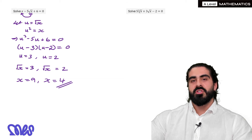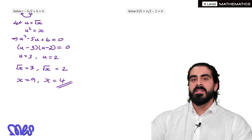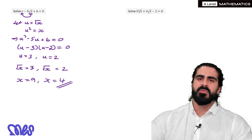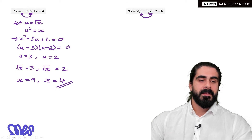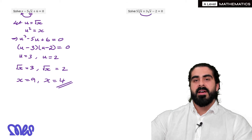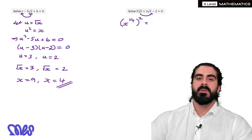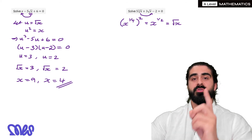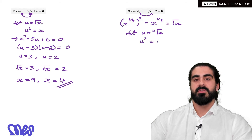Next one. This is an interesting question: 5 times the fourth root of x, plus 3 times the square root of x, minus 2 equals 0. The question is, what are we squaring to get to the other variable? If you take root x and square it, you get x — that's the wrong way around. But if we take the fourth root of x, which is x to the power of a quarter, and square that, we multiply the powers: a quarter times 2 is one half, and x to the power of a half is root x. So it's the fourth root of x which we square to get root x, meaning we let u equal the fourth root of x, and u squared equals root x.